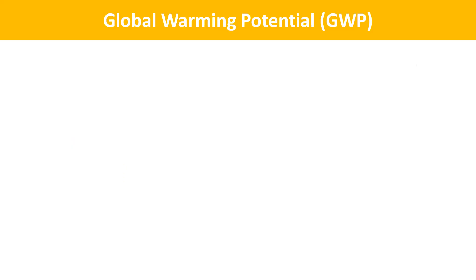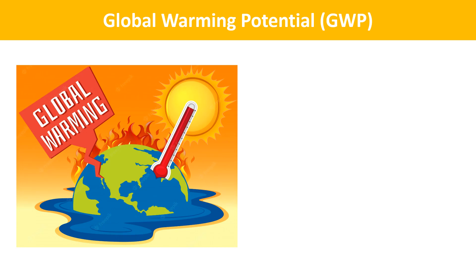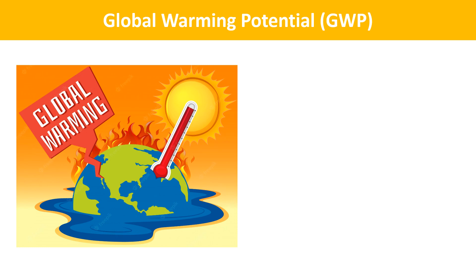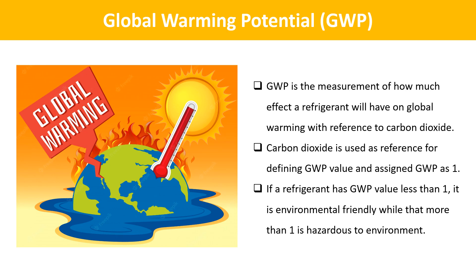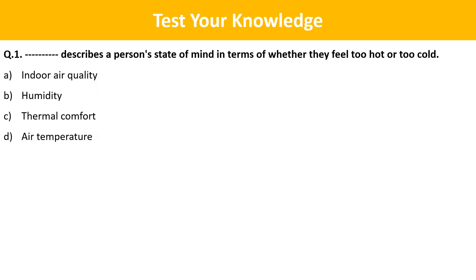The next term is Global Warming Potential. Refrigerants used in an AC unit contribute to global warming to a more or less extent. GWP is the measurement of how much effect a refrigerant will have on global warming with reference to carbon dioxide. Carbon dioxide is used as the reference for defining GWP and is assigned a GWP value of 1. If a refrigerant has a GWP value less than 1, it is environmentally friendly, while a value more than 1 is hazardous to the environment.